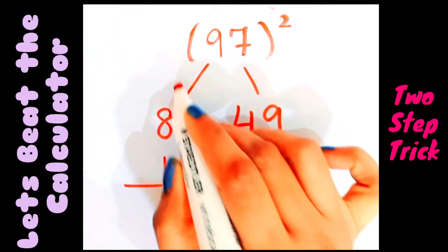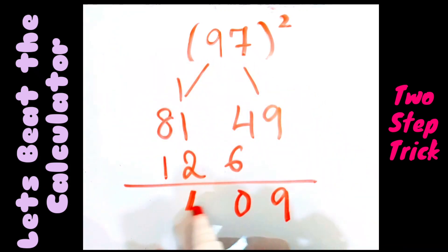So 9, 6 plus 4 is 10, 1 as carry, so we have 4 here, and 8 plus 1 is 9. So my answer for 97 into 97, that is 97 square, is 9409. See friends, it was so very easy, and trust me if you practice, you can also do it within seconds.